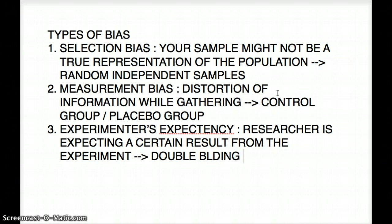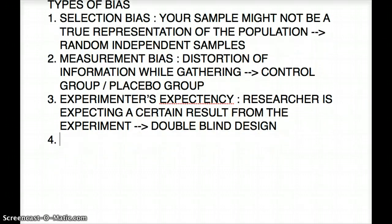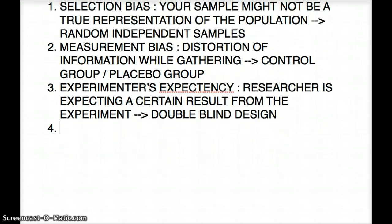What I mean by double-blind is that neither the experimenter nor the participant is going to know what they're getting — whether they're getting the drug or the placebo. That is experimenter expectancy bias.